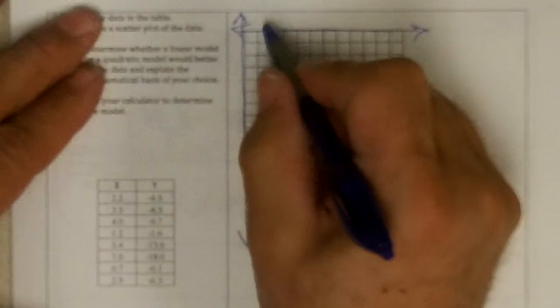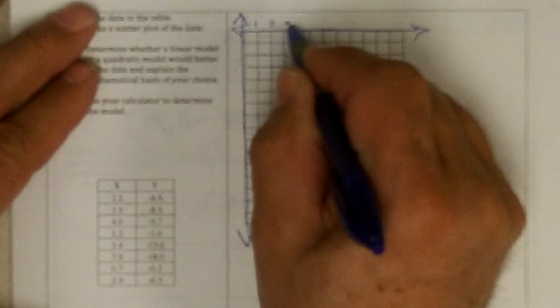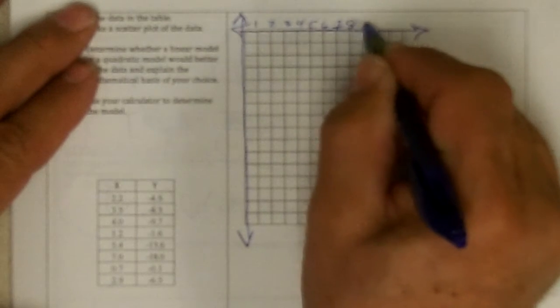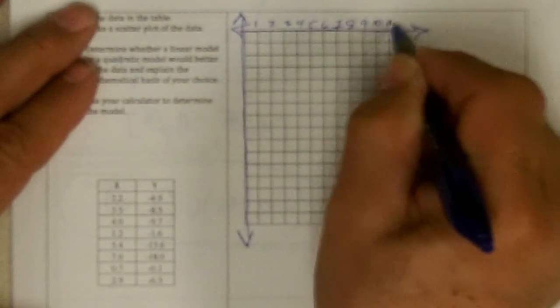And I'm going to count this way: 1, 2, 3, 4, 5, 6, 7, 8, 9, 10, 11, 12.